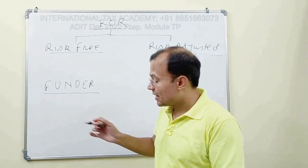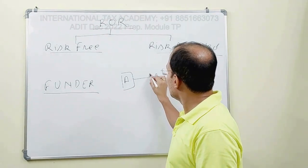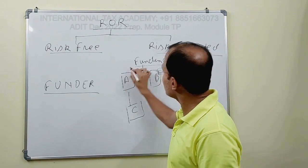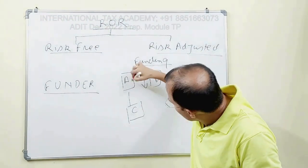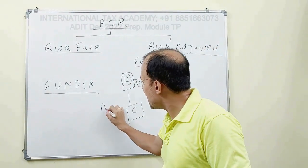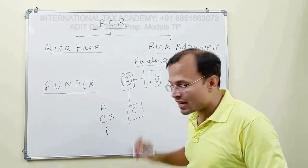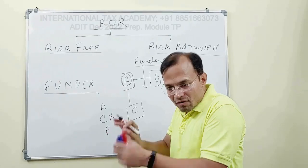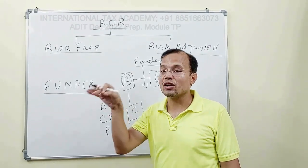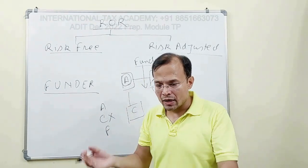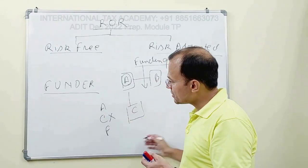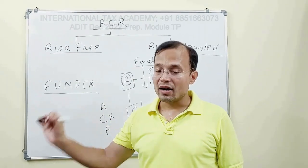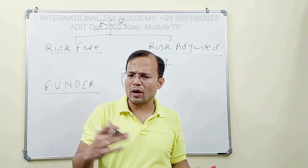In our example with entities A, B, and C, this is the funding transaction — funding was done by A. As per the framework, A did not exercise control over the financial risk. Because A does not have the capability and does not actually perform the control function, A, as the funder, will only be entitled to a risk-free rate of return.